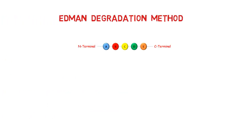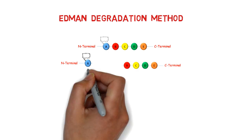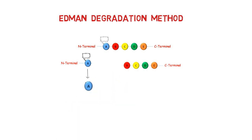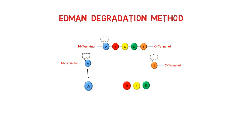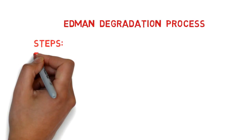In this process, the N-terminal is labeled and cleaved from the rest of the polypeptide. At the end, labeled amino acids can be detected by different techniques. This is a sequential process — amino acids are labeled and cleaved one after the other. This method can handle less than 30 amino acids.